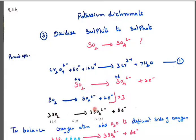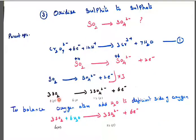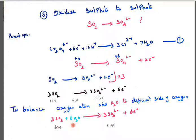So the equation should be multiplied by 3 in order to get 6 electrons. Multiplying by 3 gives 3SO₂ → 3SO₄²⁻ + 6e⁻. To balance oxygen: 2 into 3 gives 6 oxygen on the reactant side, and 3 into 4 gives 12 oxygen on the product side. The difference is 6 oxygen, which is the deficient side. So we should add 6H₂O to the deficient side of oxygen.